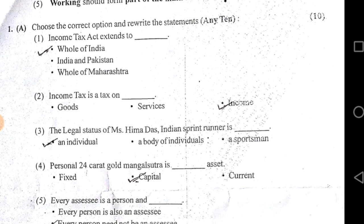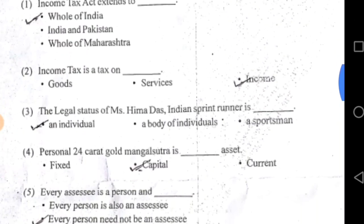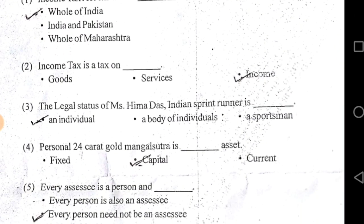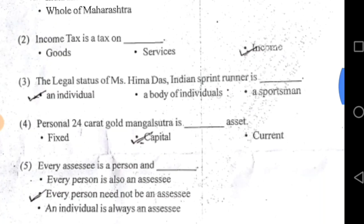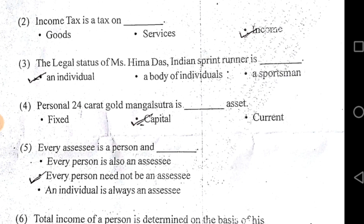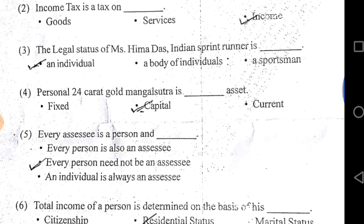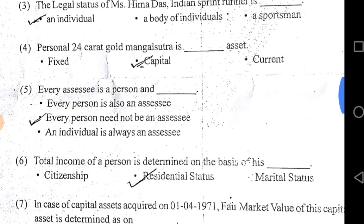The first multiple choice question: Income Tax extends to the whole of India — answer is 'whole of India.' Income tax is a tax on income, so the objectives were very easy and most students will have the answer right. The legal status of Mrs. Hima Das, Indian sprinter, is an individual. Sportsman — body of individuals — is an individual. Personal 24 karat gold mangal sutra is a capital asset.